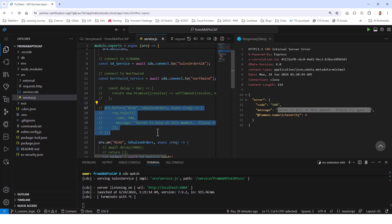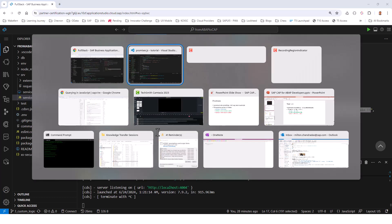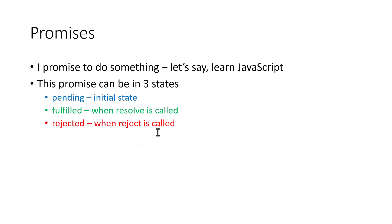Now let's go back to the slide deck and talk about promises. In JavaScript, if you want to do some asynchronous operations, one way is to use promises. Just like the name suggests, a promise is a promise — let's say you promise to learn JavaScript. This is going to take some time. Once you have finished learning JavaScript, you can call the resolve method, which means you've completed learning JavaScript. But if it fails, then you can call the reject method, which says that you have failed.